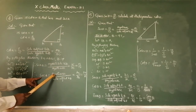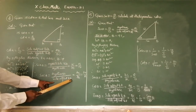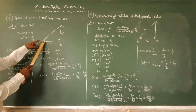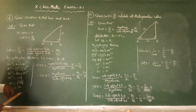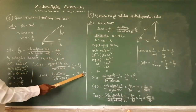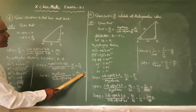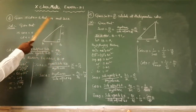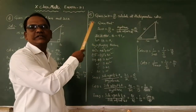Sec A definition: hypotenuse divided by the side adjacent to angle A. Hypotenuse is AC, and side adjacent to angle A is AB. AC value is 17 and AB value is 8, so sec A equals 17 by 8. Therefore sin A equals 15 by 17 and sec A equals 17 by 8. Definitions are very very important. This is the solution for the fourth problem. Now we move to the fifth problem.